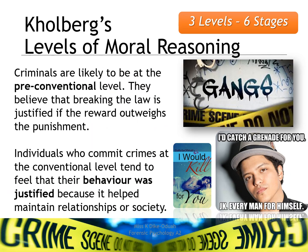In terms of linking Kohlberg's levels to offending behaviour: criminals are likely to be at the pre-conventional level, where morals are based on rewards and punishment. Individuals at this level believe breaking the law is justified if the reward outweighs the punishment. Individuals who commit crimes at the conventional level tend to feel their behaviour was justified because it helped maintain relationships or society — for example, a young person dealing hard drugs illegally in order to maintain their friendships.